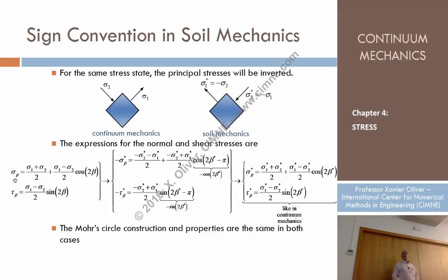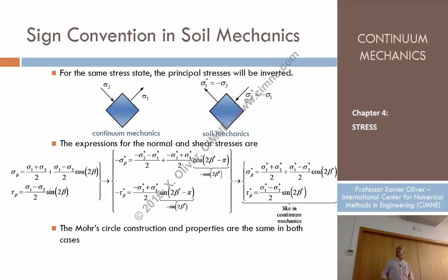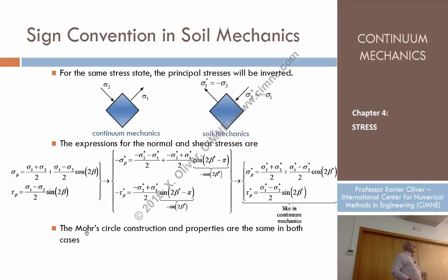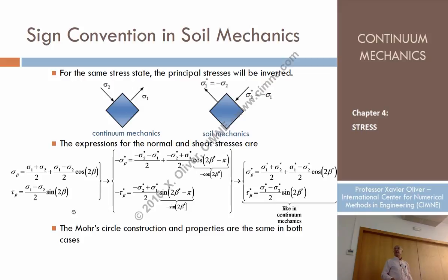So with this sign criterion — changing all signs — the formulas that are the starting point for constructing the Mohr circle are the same when using the soil mechanics criterion. Everything else is the same: the construction of the Mohr circle, the pole, the formulas. The only difference is that we must consider opposite signs for sigma and tau in one criterion versus the other.